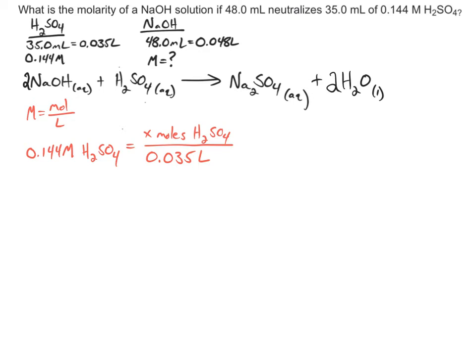We can then multiply the liters times the molarity to solve for the number of moles, where we get x is equal to 0.00504 moles of sulfuric acid.